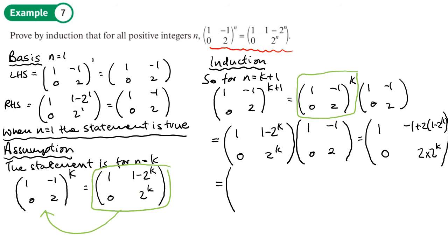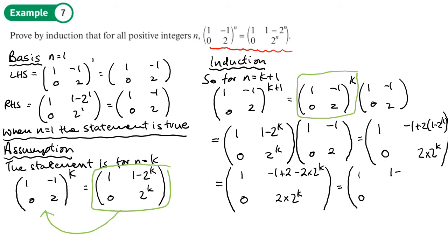Expanding: top-left is still 1, top-right becomes negative 1 plus 2 minus 2 times 2k, and bottom-right is 2 times 2k. Simplifying: top-right gives 1 minus 2 to the k plus 1, and bottom-right gives 2 to the k plus 1. So the result is [1, 1 minus 2 to the k+1; 0, 2 to the k+1].